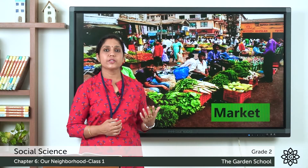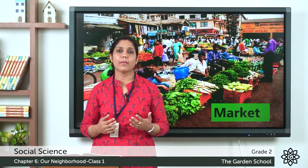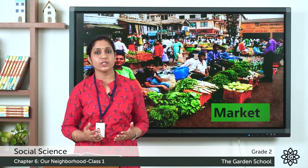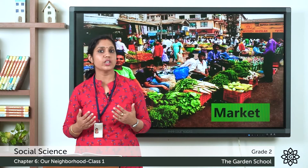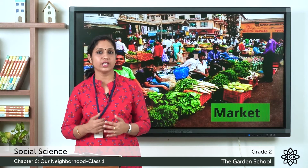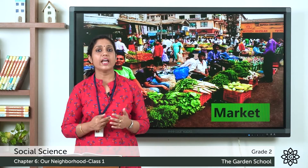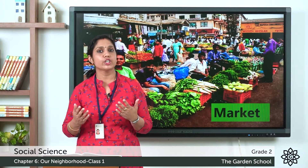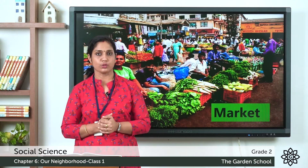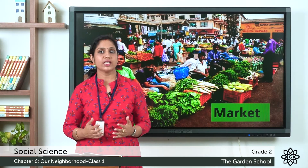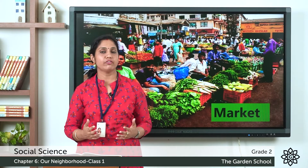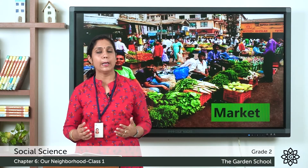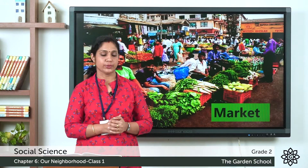In this picture you can see a market. A market is a place where you can buy different things, and in a market you have different shops also. So now let's see about the different shops that we find in a market.